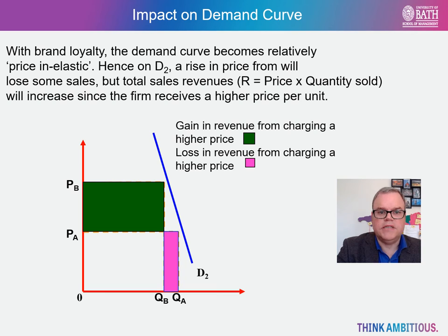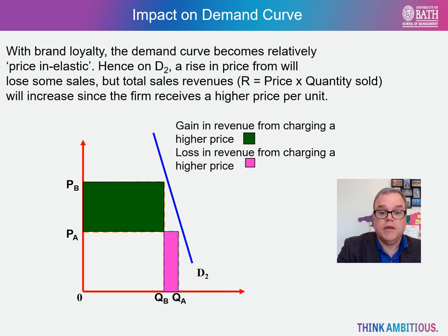For the firm, the impact of facing a more price inelastic demand curve can be seen in this diagram. If we take the new more price inelastic demand curve D2 from the previous slide, we can see that the firm now has greater discretion over price. For instance, a rise in price from PA to PB will lose some sales, which will fall from QA to QB, and it will lose some revenue — that is price times quantity sold — illustrated by the pink shaded area. However, total sales revenue will increase since the firm now receives a higher price per unit sold, and this increase in revenue is shown by the green shaded area.